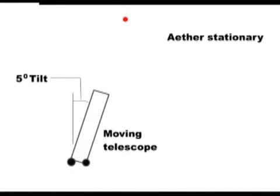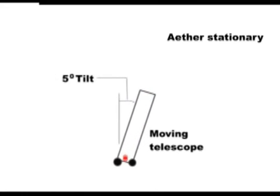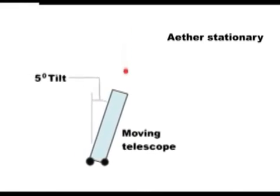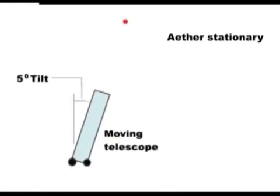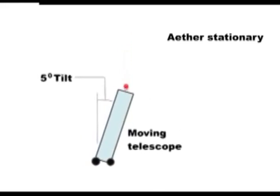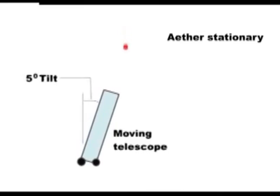However, there is a simple experiment that can determine whether it was the earth that was moving or the ether and starlight. All that you had to do was record the tipping required for any particular star, then fill the telescope with water, which greatly slows down the speed of light in the telescope. You can see that the starlight does not now reach the eyepiece at the bottom.